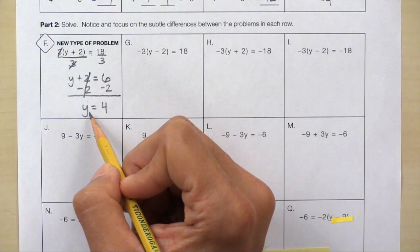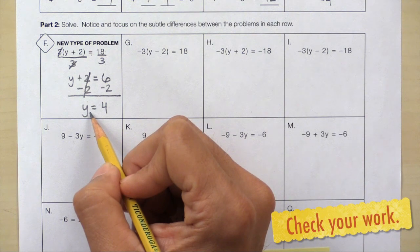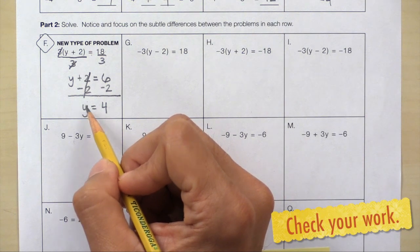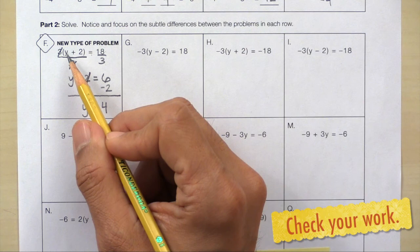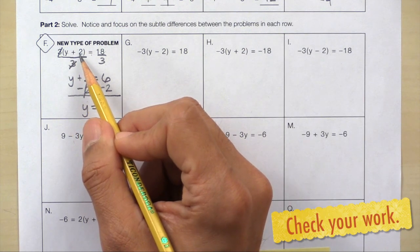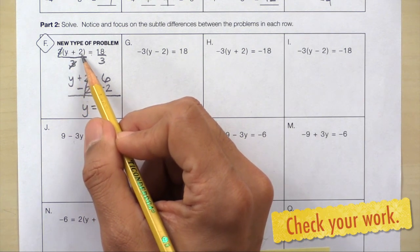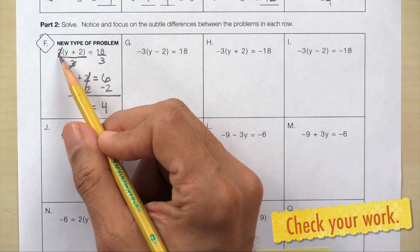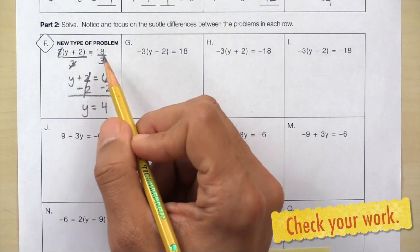Let's check that answer. Here we found that y equals 4. So if you took this number 4, added 2, that would give you 6. Now take 6 and multiply it by 3, and that will give you 18.